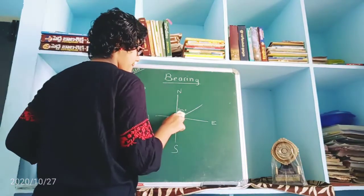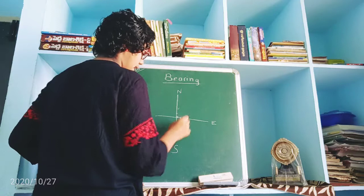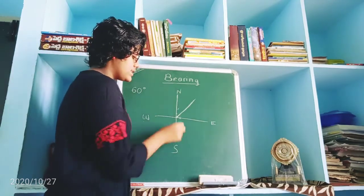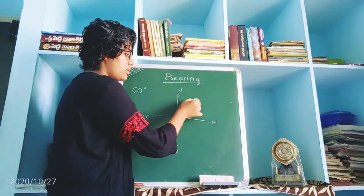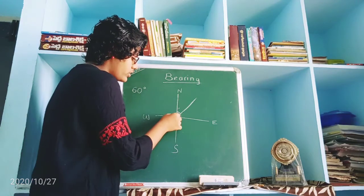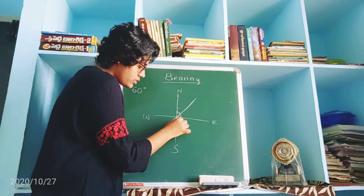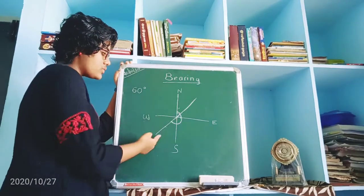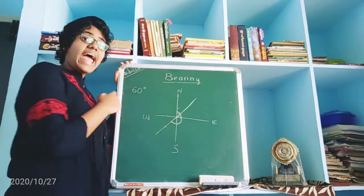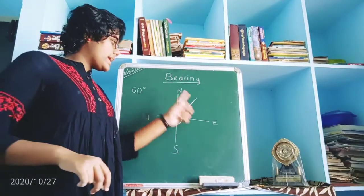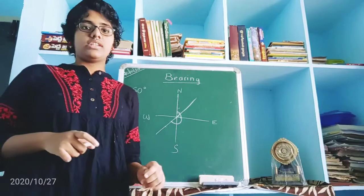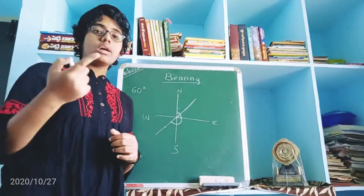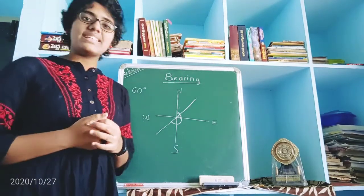These bearing angles should always be counted only from the North, and measured in a clockwise direction. So today we have completed the topics of direction and bearing. In the next video, I will talk about diagrams, conventional signs, and symbols. Thank you.